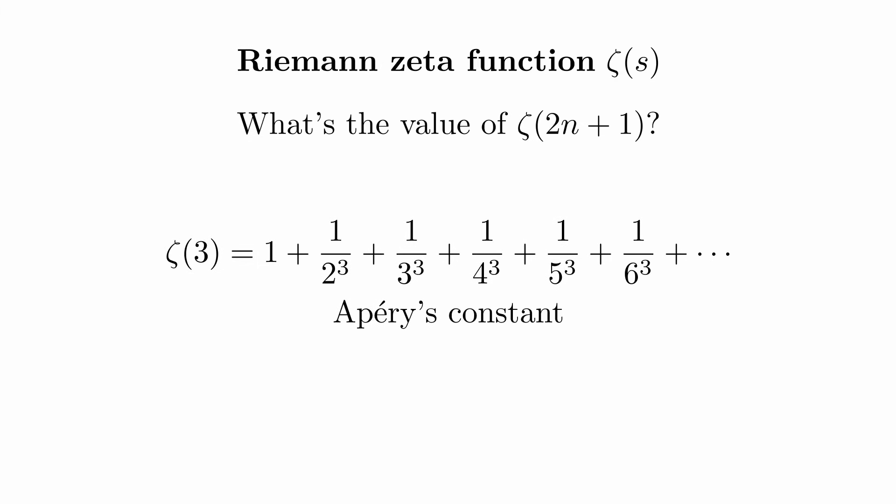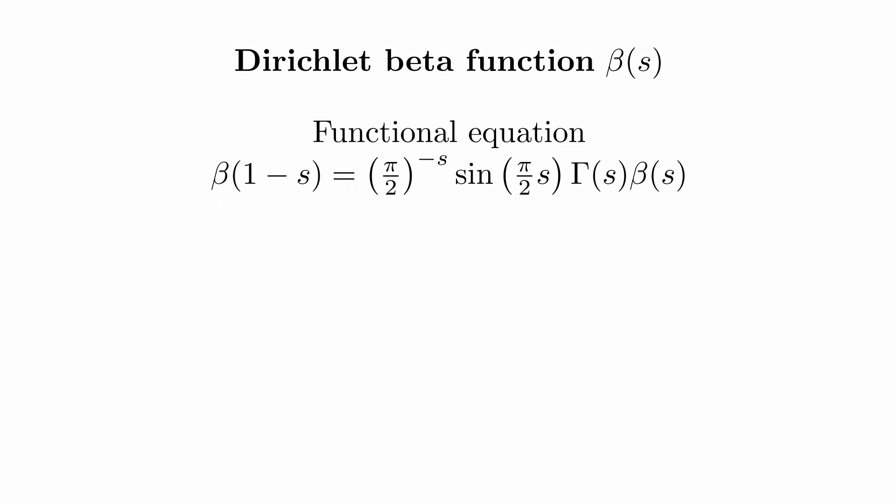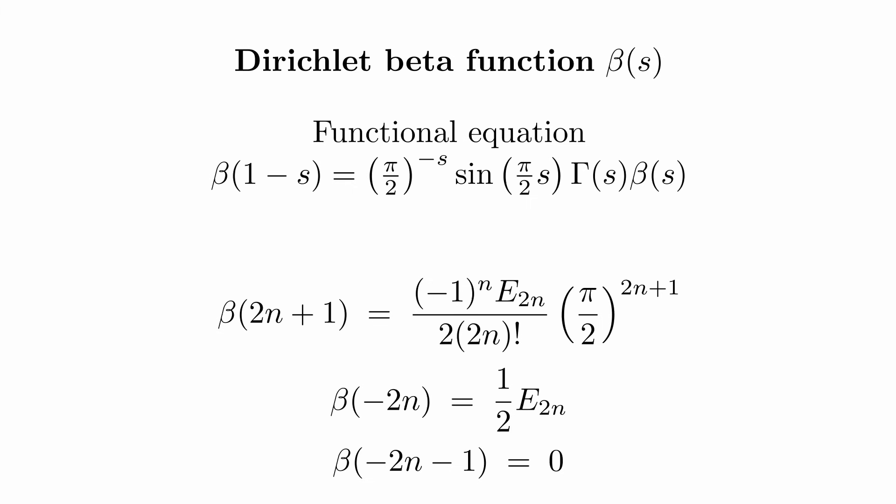So we know the value of the zeta function at the positive even integers and at all the negative integers. So what's the value at the odd positive integers? Not very much is known about these. For instance, the value at 3 is called Apéry's constant, and it's proven to be irrational. For the Dirichlet beta function, we also have a functional equation, and given our known values, we can again deduce the values at the negative integers.